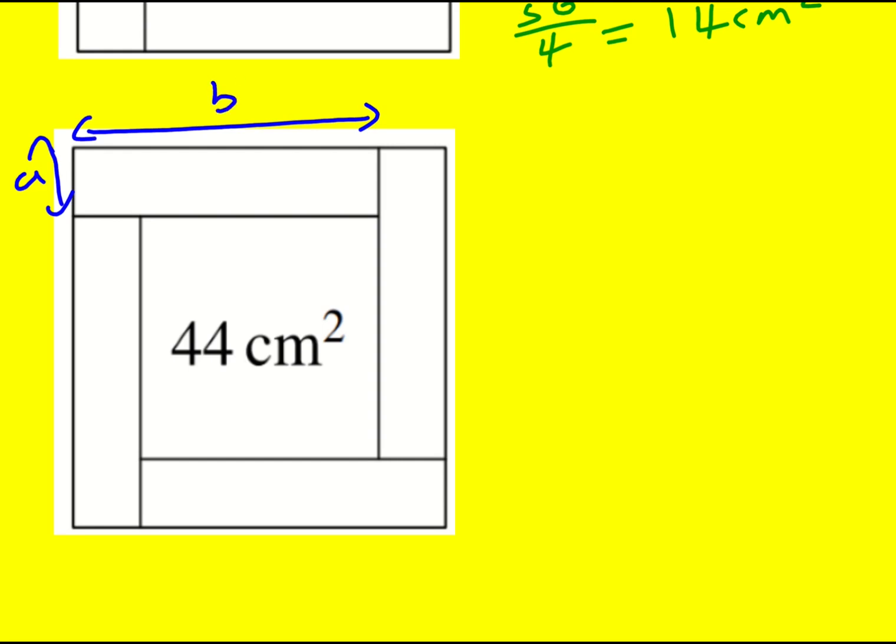In the same kind of way, I labeled it A and B, but actually I then labeled this as B minus A. And that's also going to be B minus A, so I can write down that B minus A squared is actually 44, which means that B minus A is root 44.